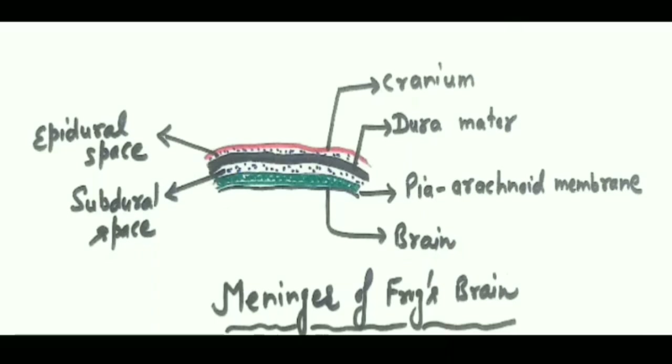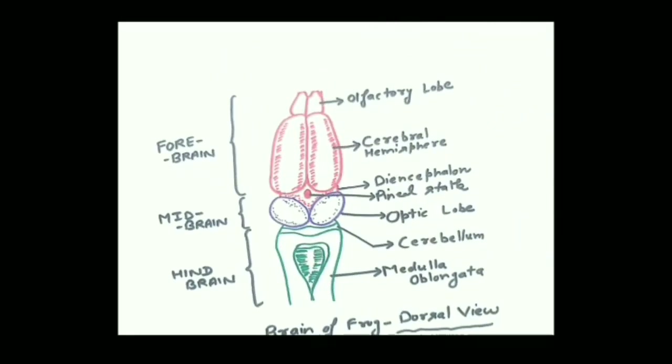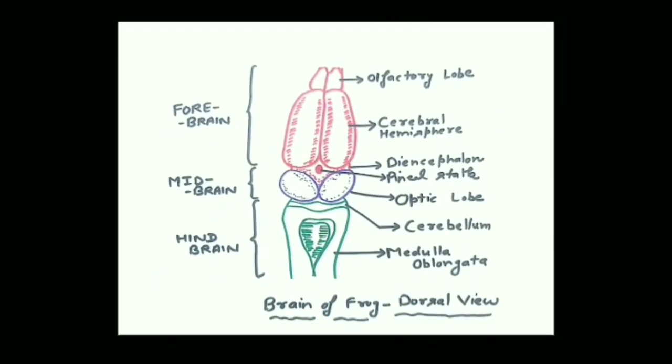The meninges and cranium provide protection to the brain. The brain is composed of three parts: forebrain, midbrain, and hindbrain. In the dorsal view, the forebrain consists of olfactory lobes, cerebral hemispheres, and diencephalon. The midbrain or mesencephalon is made up of two optic lobes, and the hindbrain is made up of cerebellum and medulla oblongata.